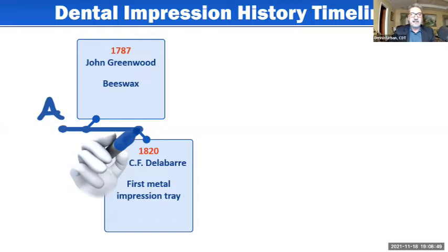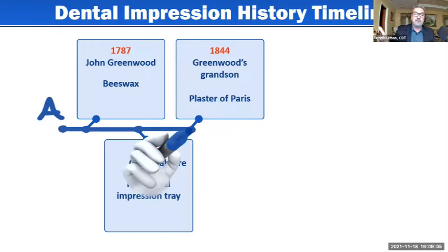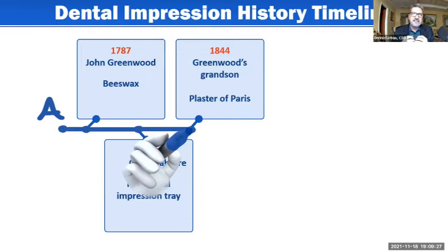In 1820, CF Delabar used the first metal impression tray. Now there are so many impression trays and materials to choose from — it can get confusing. In 1840-44, Greenwood's grandson started using plaster of Paris for impressions. When I first started back in the seventies, we still used to get crown and bridge impressions in plaster. They had to be broken apart when taken out of the mouth, pieced together in the laboratory, soaked in a separating solution, and then stone poured into them — a very time-consuming method.